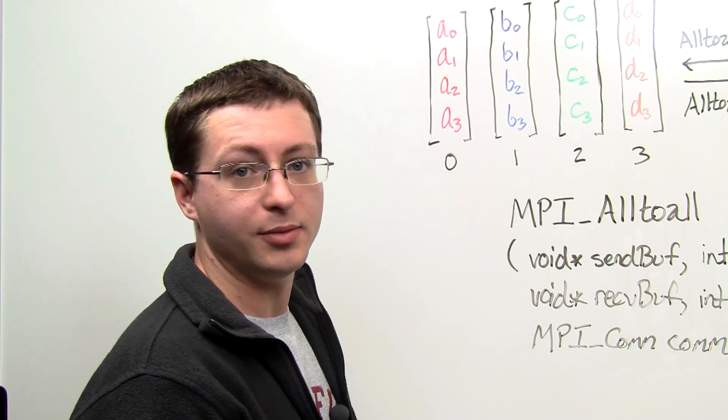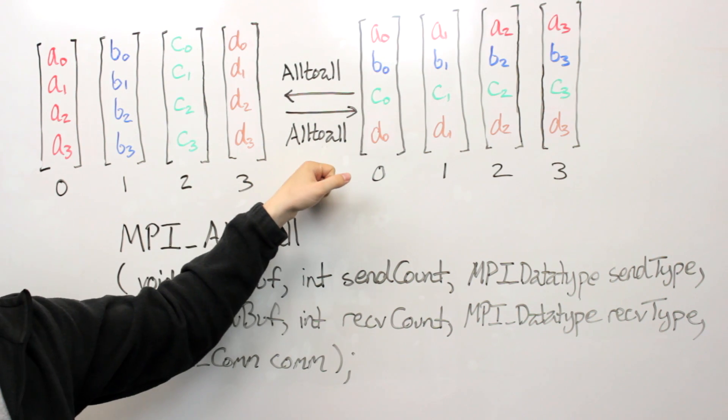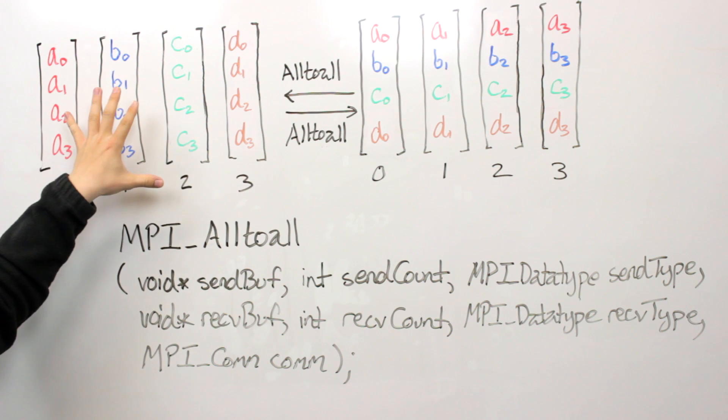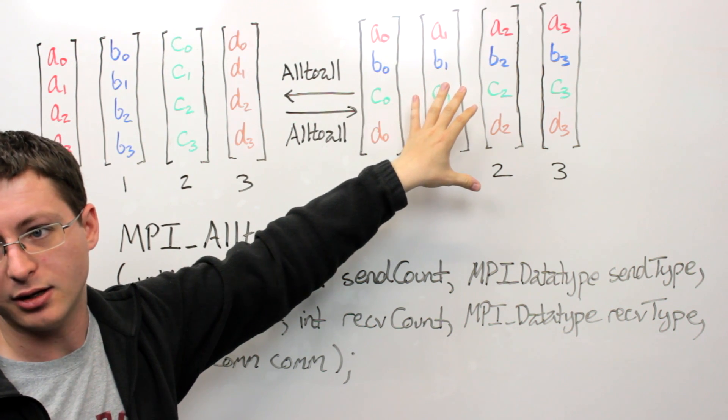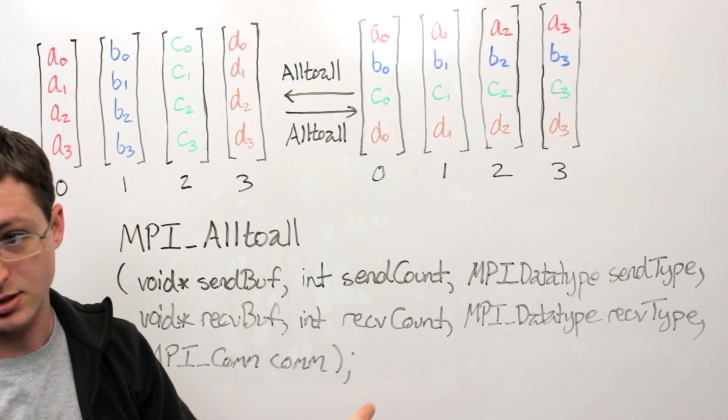So this is nice for several reasons. One, this operation is actually its own inverse. So you'll notice if you call MPI all-to-all on this data, it will produce this output. If you then call the same routine again on this output, it'll produce the original input. So the routine is its own inverse.